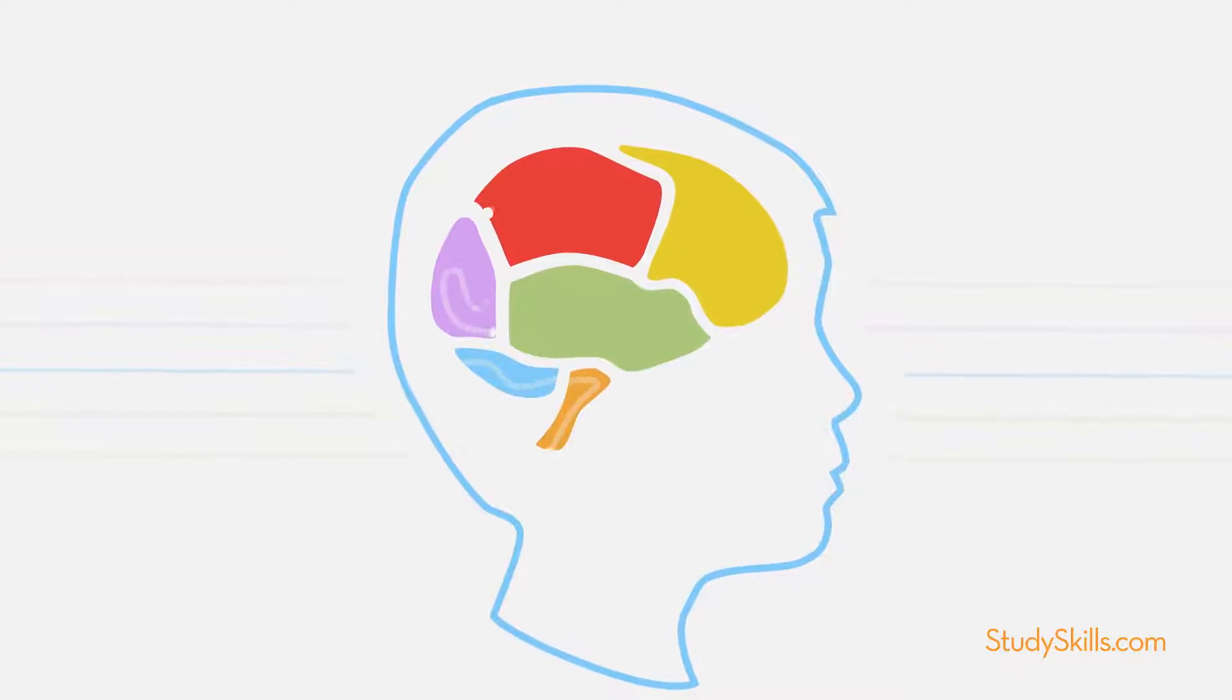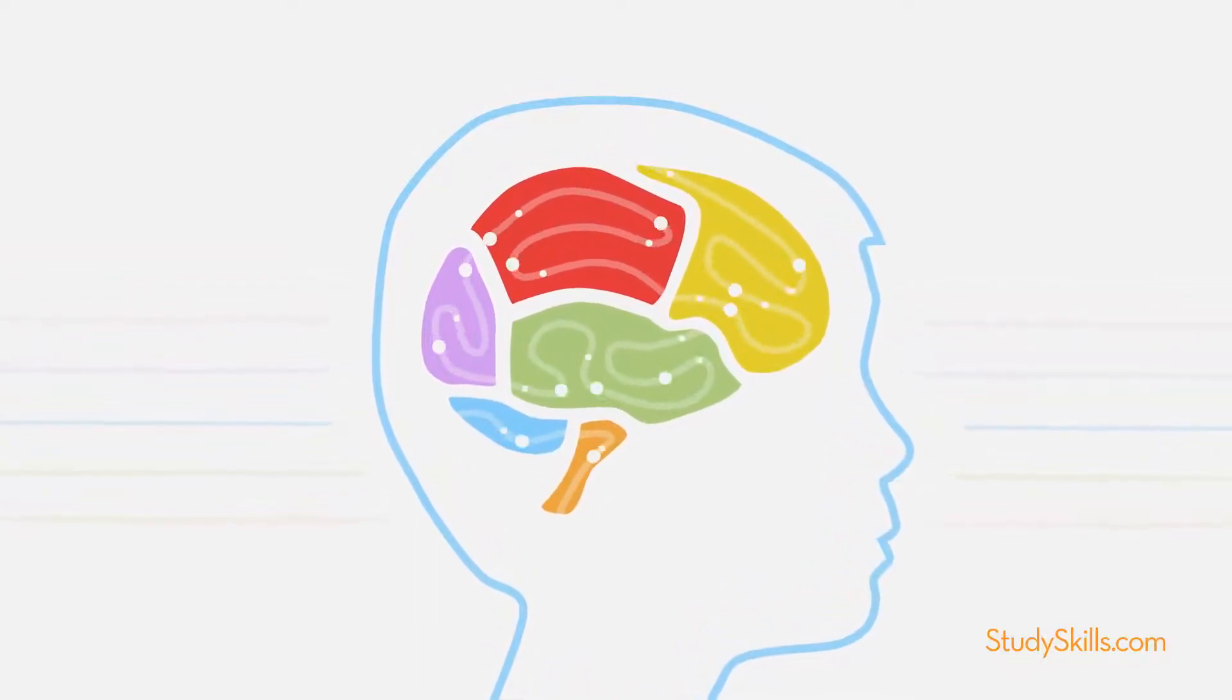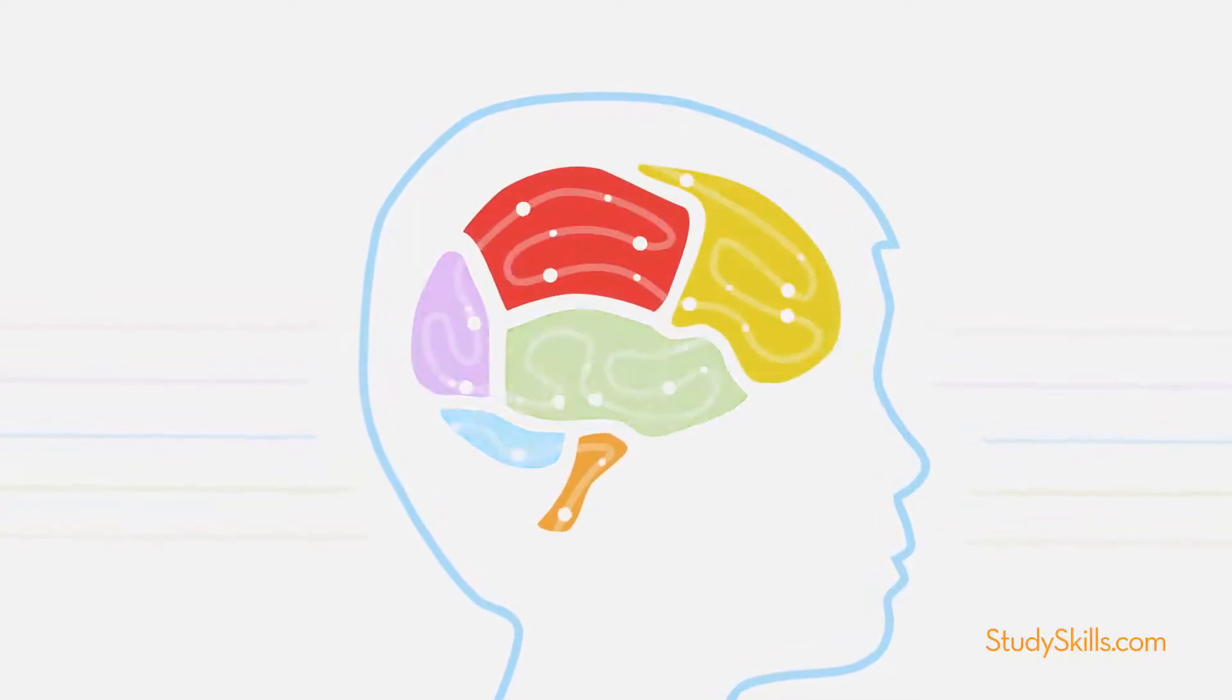These sections communicate with each other through brain wires called neurons. Neuron wires create pathways in your brain for every thought and movement you make.